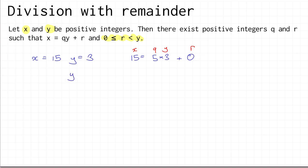On the other hand, if you had y equal to 2 with the same value of x, then 15 equals 7 times 2 — so 7 is the quotient — and you get a remainder of 1. The remainder is strictly less than the number y that you were trying to divide by.